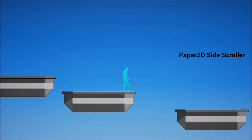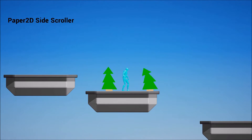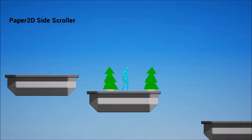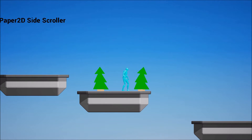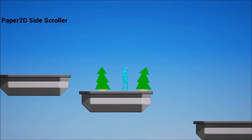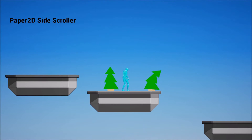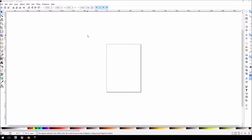Hello everybody, my name is Paul from Cryonetic. In today's video we will be covering the Paper 2D Side Scroller. We will be adding our own little tree that we drew in Inkscape, exported to Blender, and then added our own animation to it. This isn't a keyframe-by-frame animation — this is a normal animation using an armature created in Blender and then exported to Unreal Engine 4. This is the basic part of a new tutorial series, so if you want to learn something about creating 2D graphics, stick around.